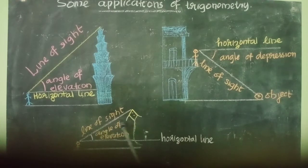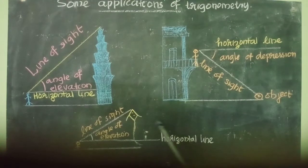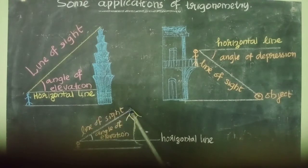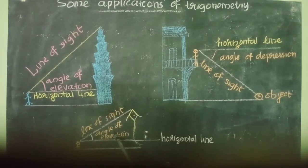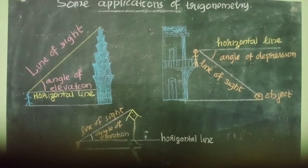Now you see the second figure. One observer is here and he is observing a kite in the sky. This is the horizontal line. The line segment joining the eye of the observer and the object is the line of sight. Here you can see the object is above the horizontal line, so there is an angle of elevation formed.